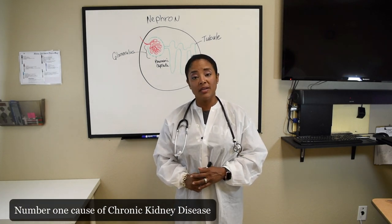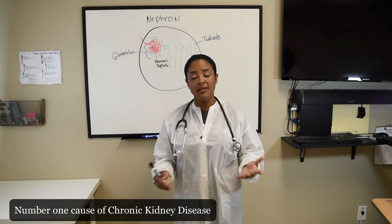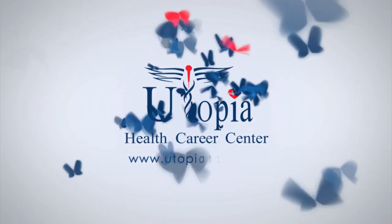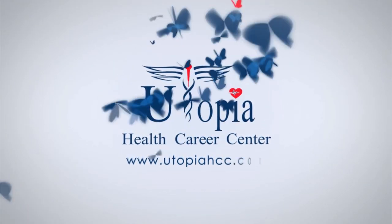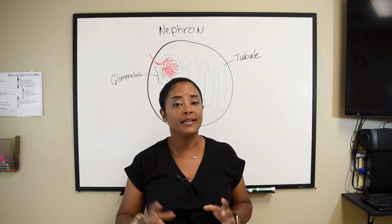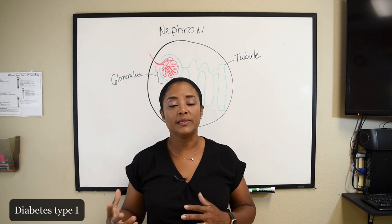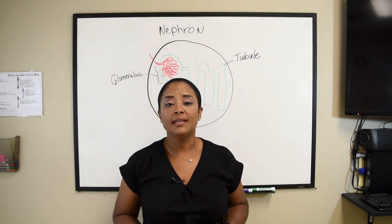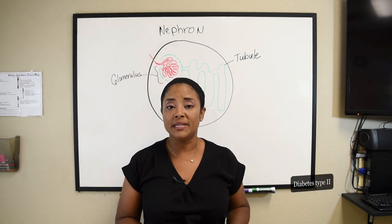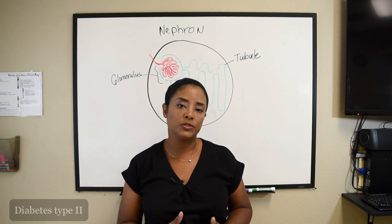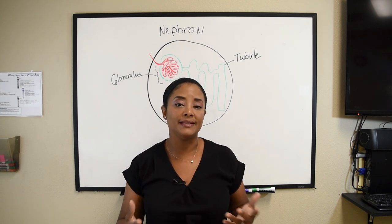The number one cause of kidney failure in the United States is diabetes. There are two types of diabetes: diabetes type 1, which is related to an autoimmune disease, and diabetes type 2, which is related to our lifestyle choices and diet.